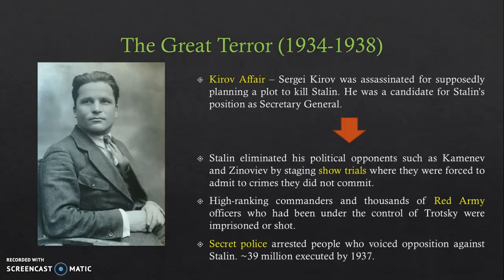The Great Terror occurred from 1934 to 1938. Stalin used the Kirov affair as an excuse to carry out the Great Terror. Sergei Kirov was assassinated — he was supposedly planning a plot to kill Stalin and was a candidate for Stalin's position as Secretary General. Stalin felt threatened by Kirov and put the blame on him. Using that, he got rid of political opponents such as Kamenev and Zinoviev by staging show trials where they were forced to admit to crimes they did not commit. Show trials are like court cases where opponents are forced to confess prior to the trial itself.